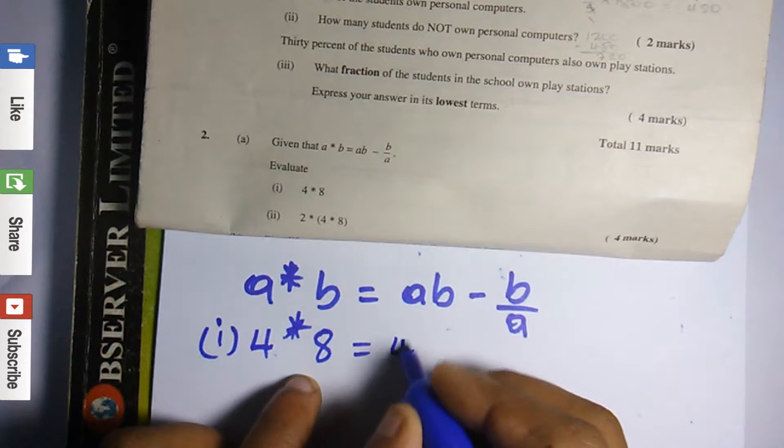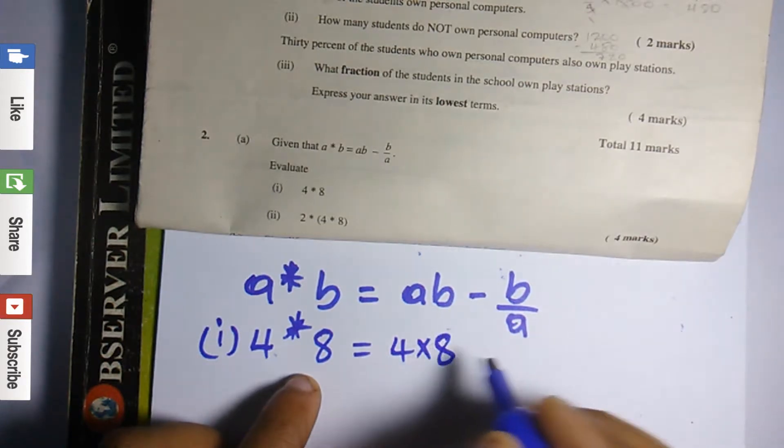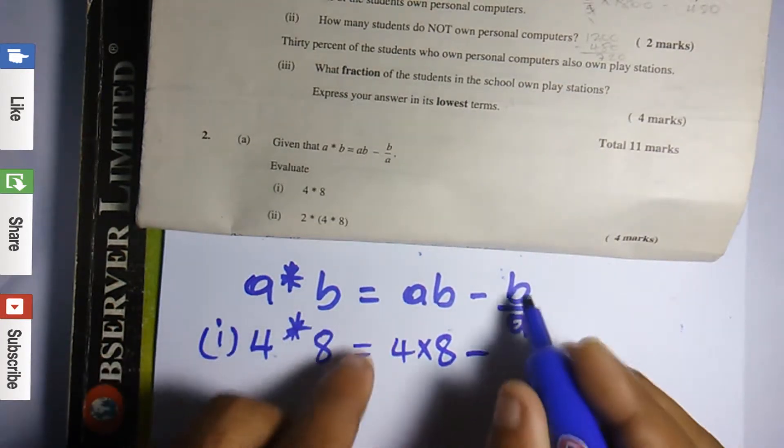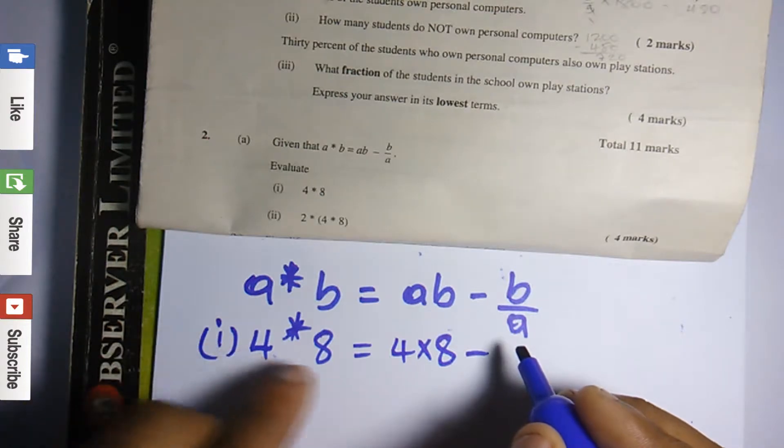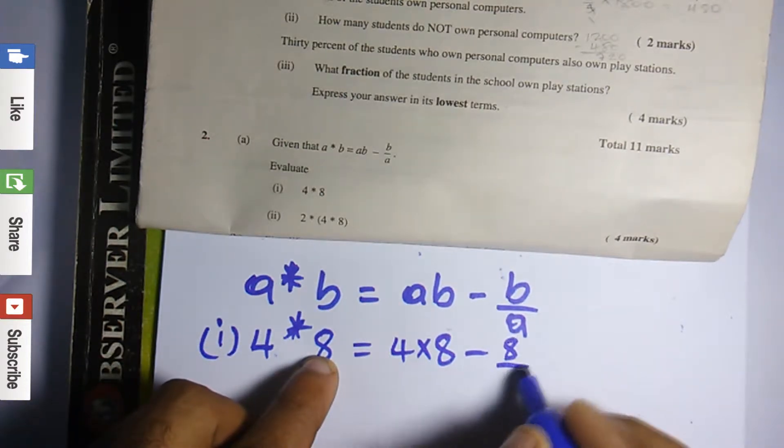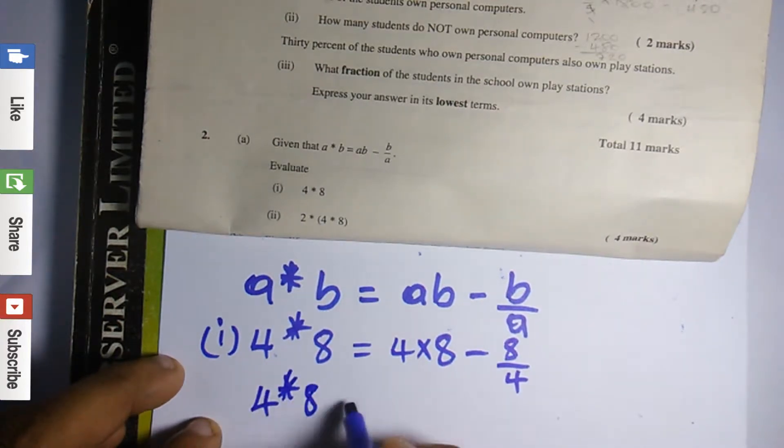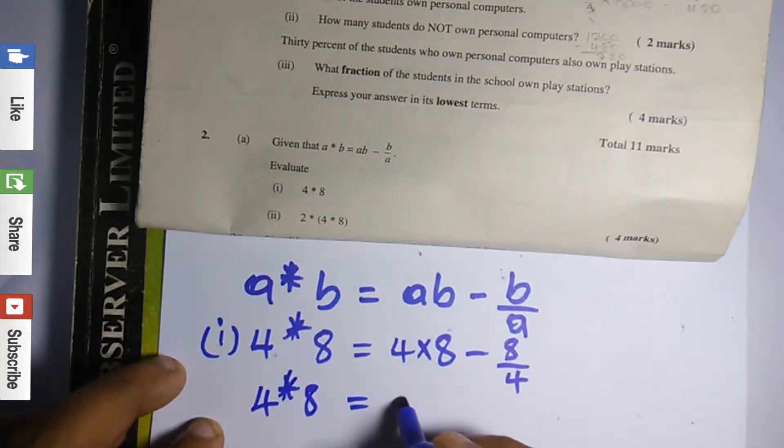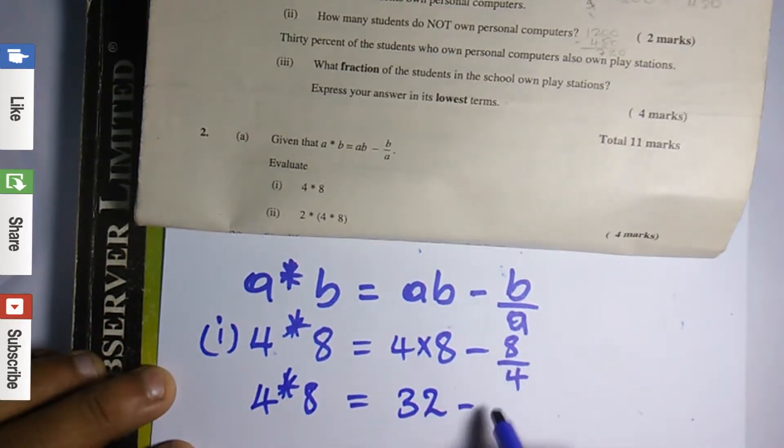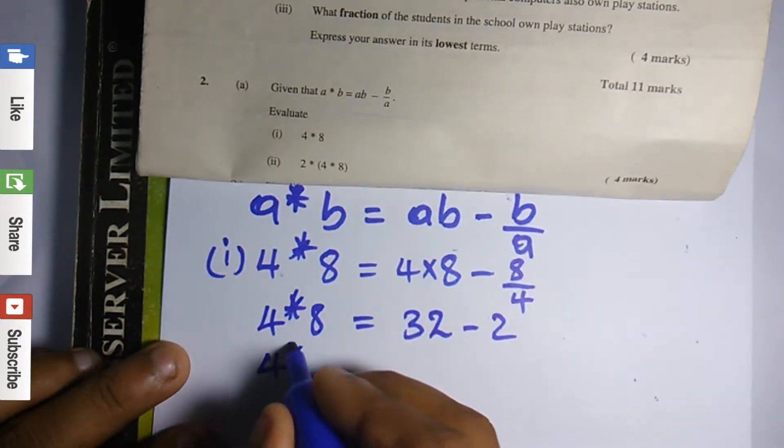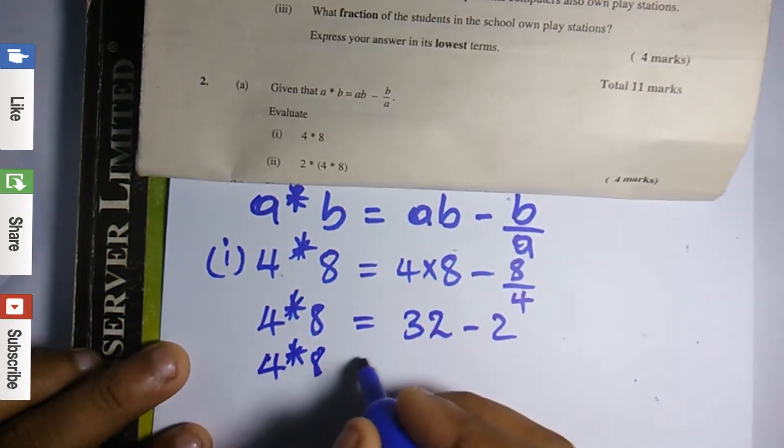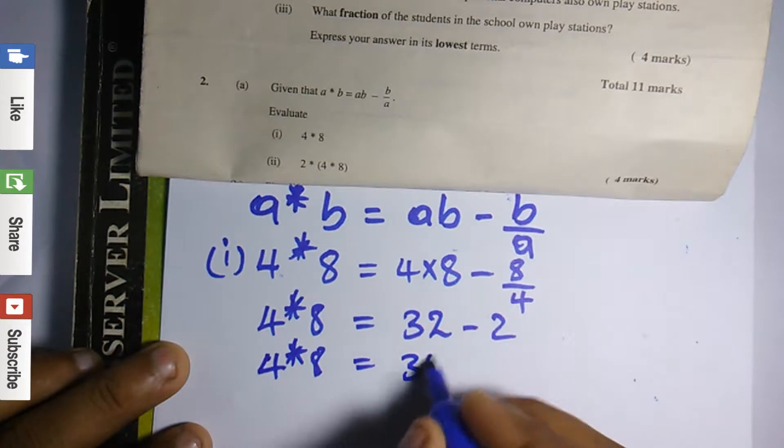Minus b over a, which is 8 over 4. So 4 star 8 is equal to 4 times 8 is 32, minus 8 over 4 is 2. So 4 star 8 is equal to 30.